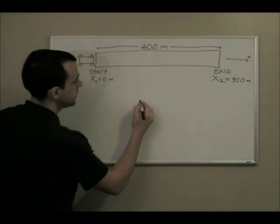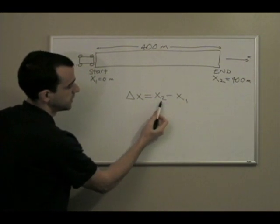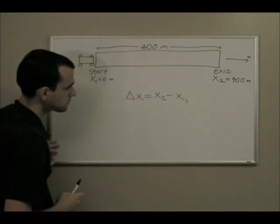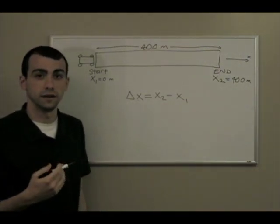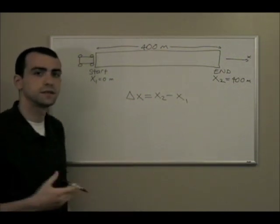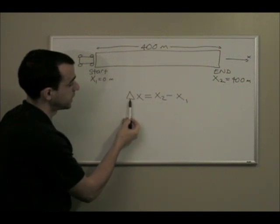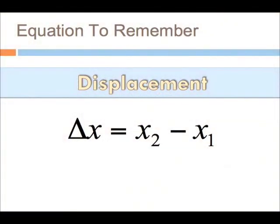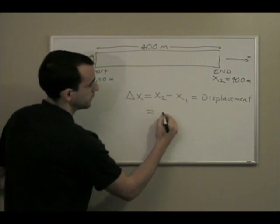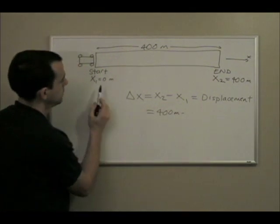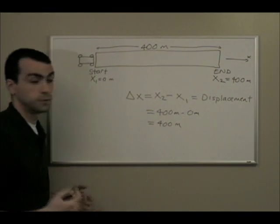Displacement is defined mathematically as the final location minus the initial location. We write this as ΔX, where the triangle is the Greek letter delta meaning 'the change in something' — so ΔX is the change in position, defined as X2 minus X1. In this example, displacement equals 400 meters minus 0 meters, so the car's displacement was 400 meters to finish the race.